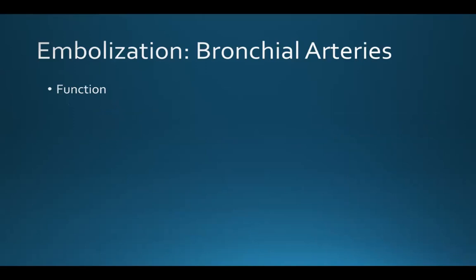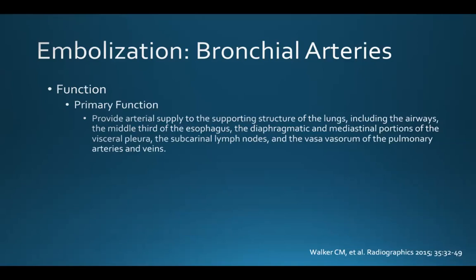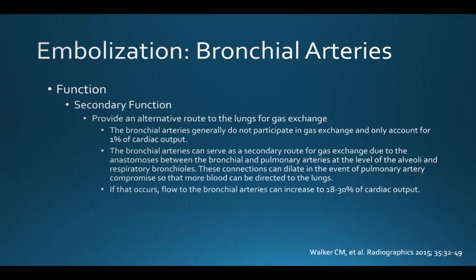The bronchial arteries have two functions. The primary function is to provide arterial supply to the supporting structures of the lungs, including the airways, the middle third of the esophagus, the diaphragmatic and mediastinal portions of the visceral pleura, the subcarinal lymph nodes, and the vasovasorum of the pulmonary arteries and veins. These vessels also have a secondary function: to provide an alternative route to the lungs for gas exchange. Under normal circumstances, the bronchial arteries generally don't participate in gas exchange and only account for 1% of cardiac output. But they can serve as a secondary route due to those anastomoses between the bronchial and pulmonary arteries at the level of the alveoli and respiratory bronchioles.